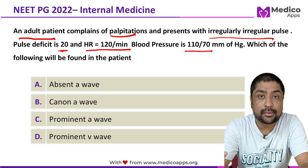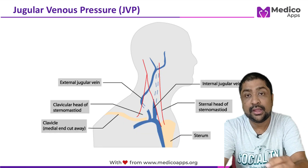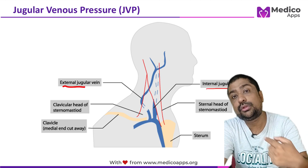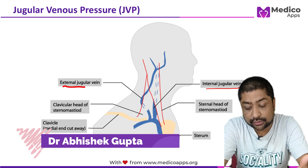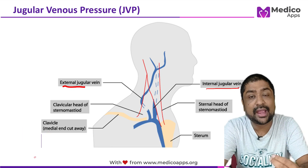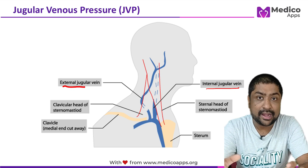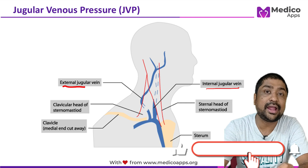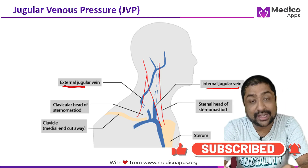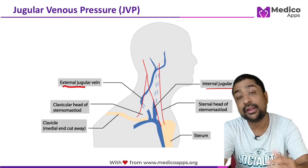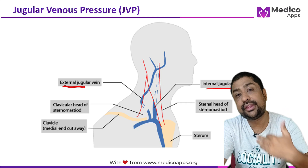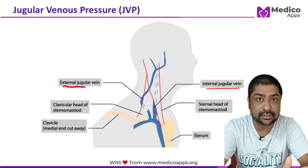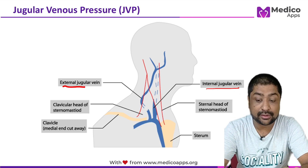This is a very important question from a super important topic — jugular venous pressure. Both external and internal jugular veins empty into the right atrium. So if we measure the pressure of these jugular veins, we will have an idea about the pressure in the right atrium. This pressure can be increased or decreased in many cardiac conditions, and so we can have an idea of the pathology that is existing.